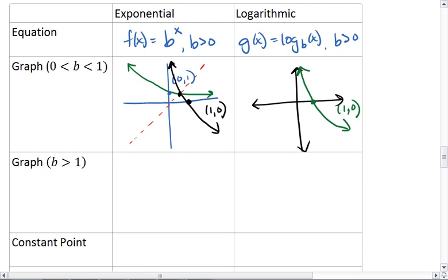For when our base is greater than 1, again for exponential, we know we're going to pass to the point but that we increase now. What this means for the logarithm is that we'll pass to the point but will look like that.